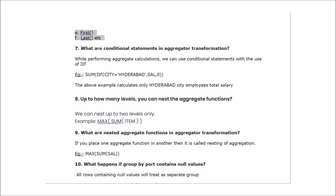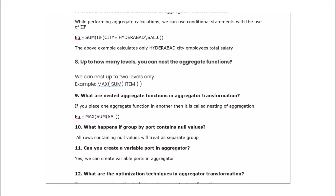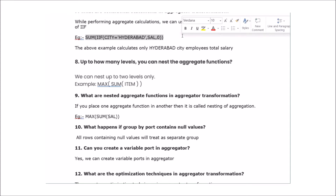The next question: what are conditional statements in aggregator transformation? While performing aggregate calculations, we can use conditional statements with an IF condition. For example, SUM is the aggregate function and the condition is: if city equals Hyderabad, then sum the salary, otherwise pass zero. This calculates the sum of salaries only for employees in Hyderabad.